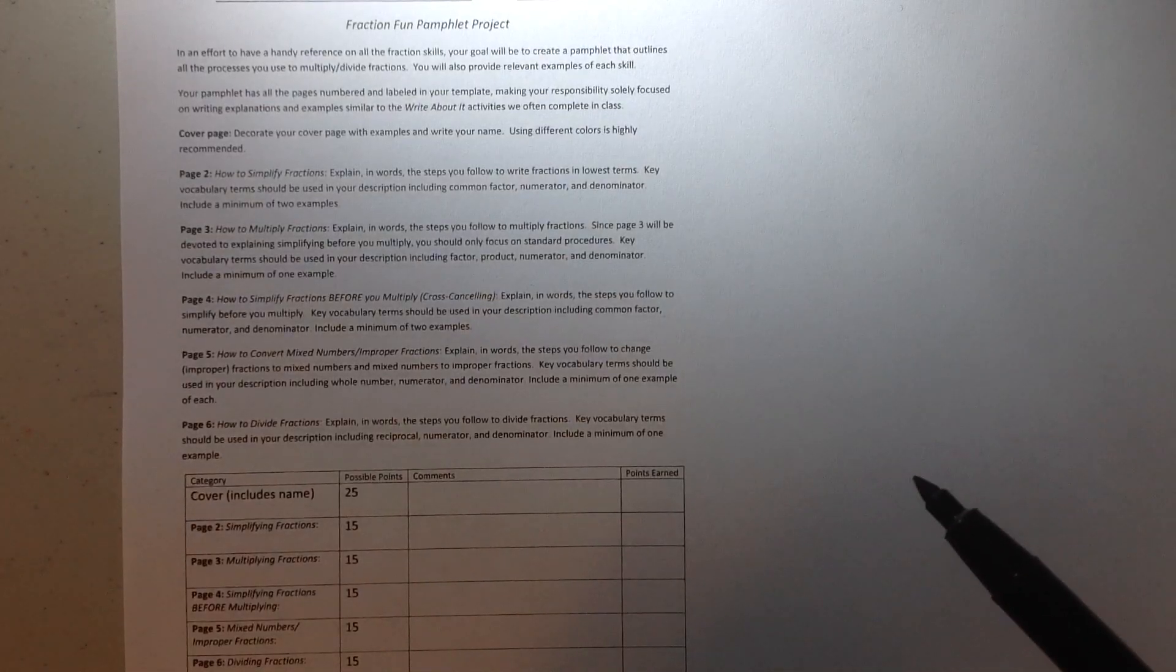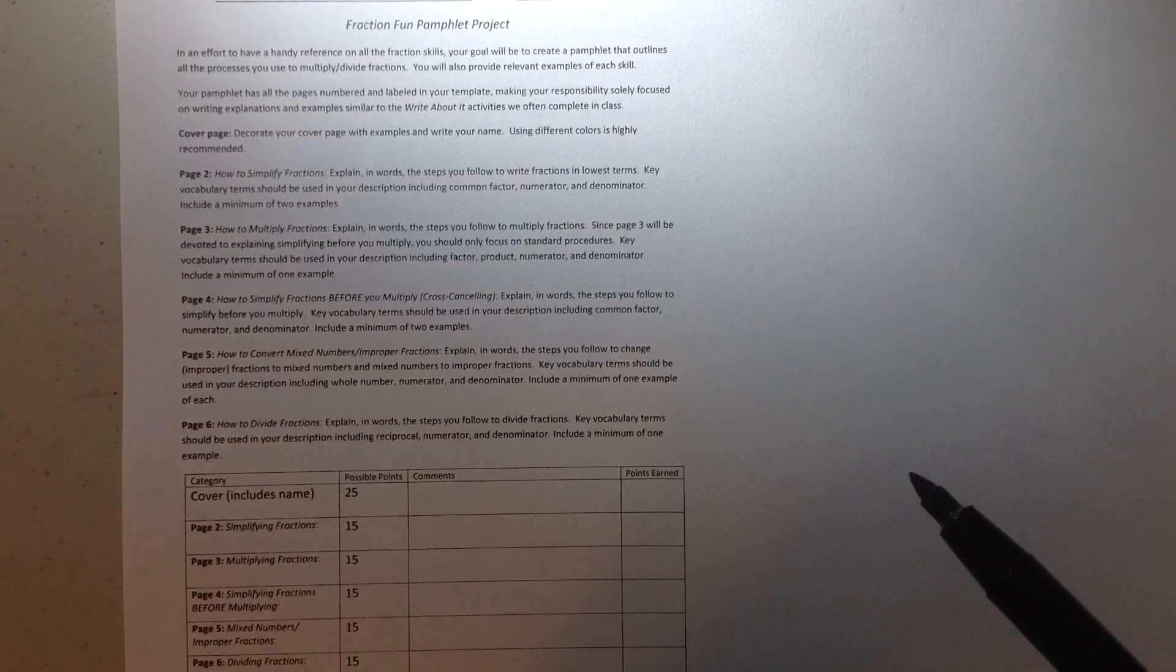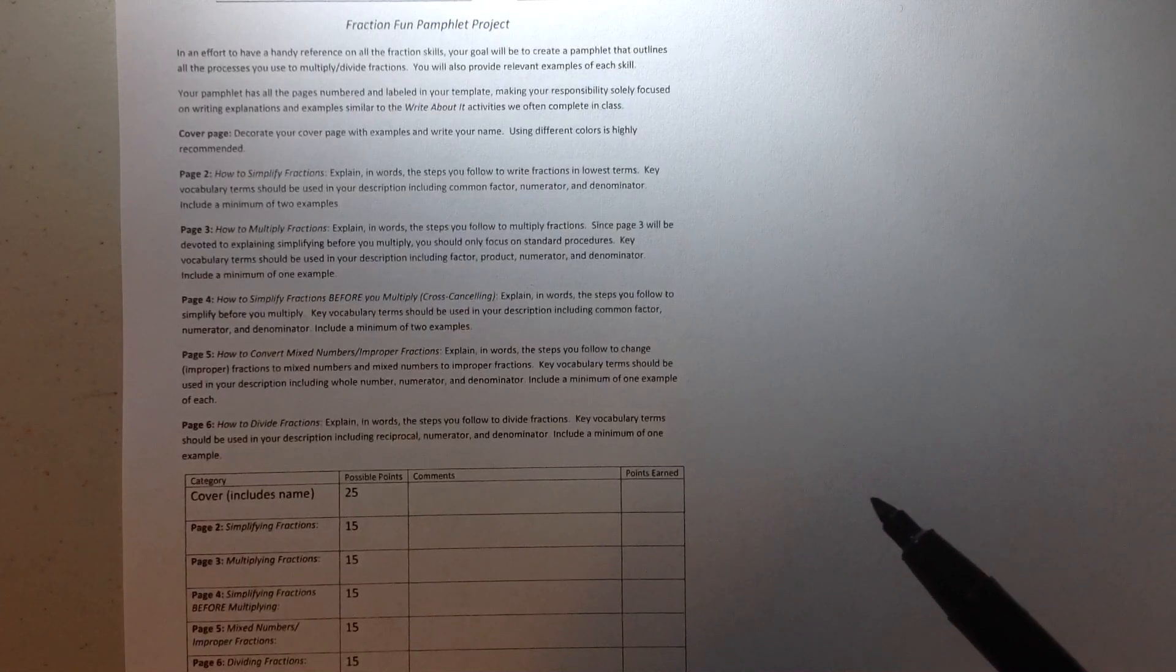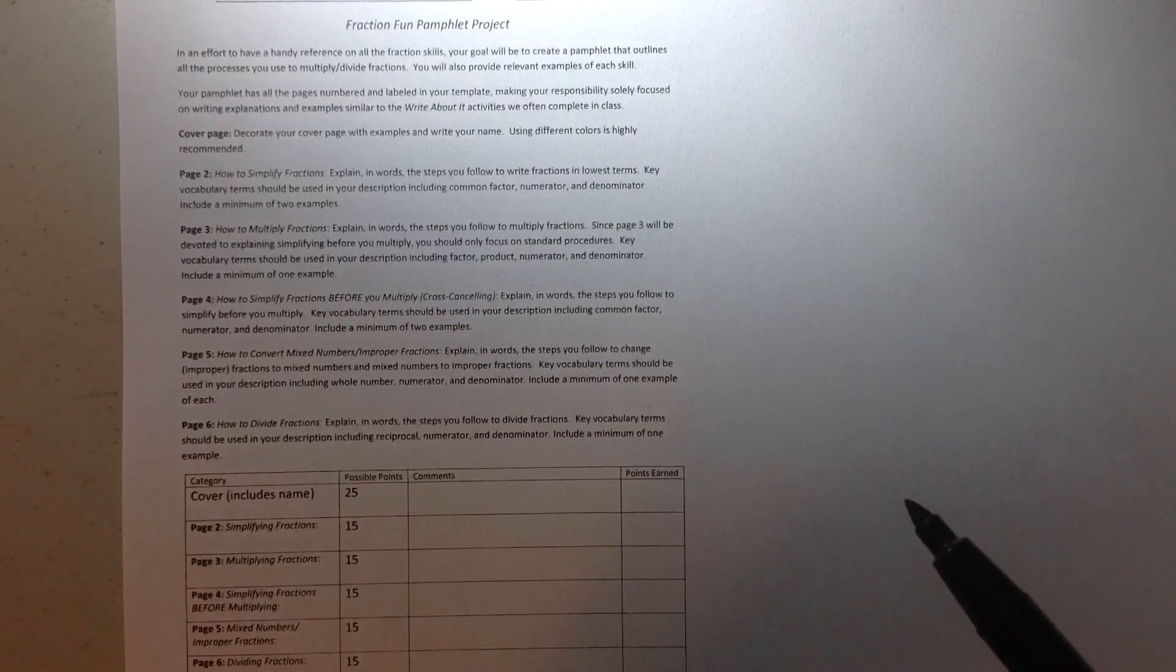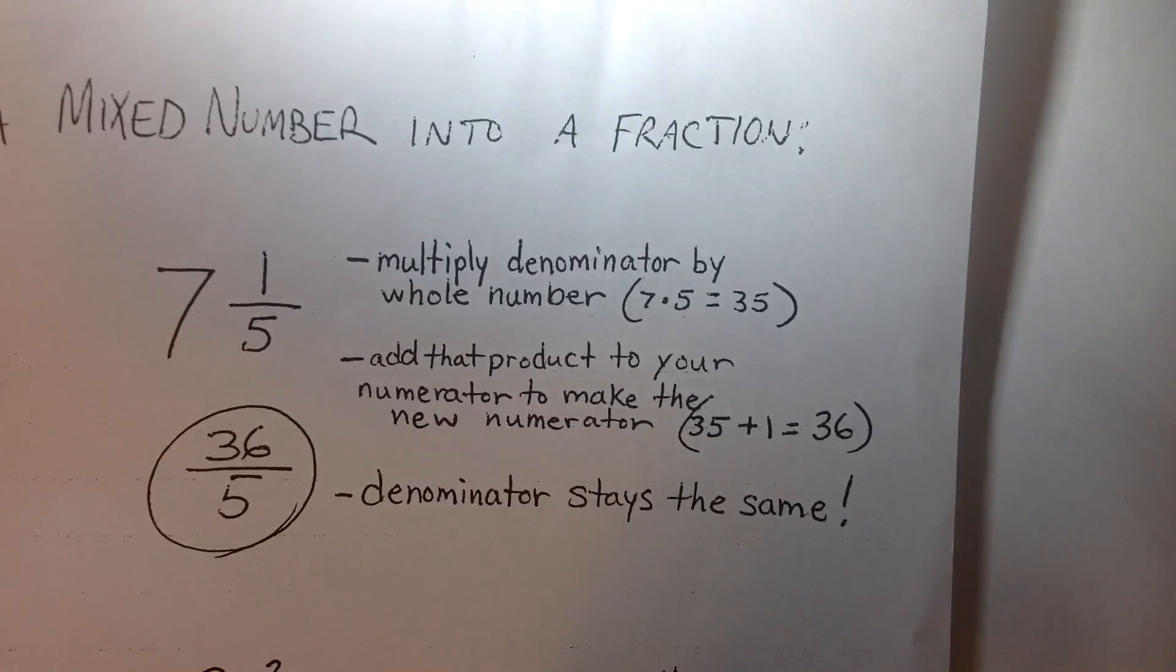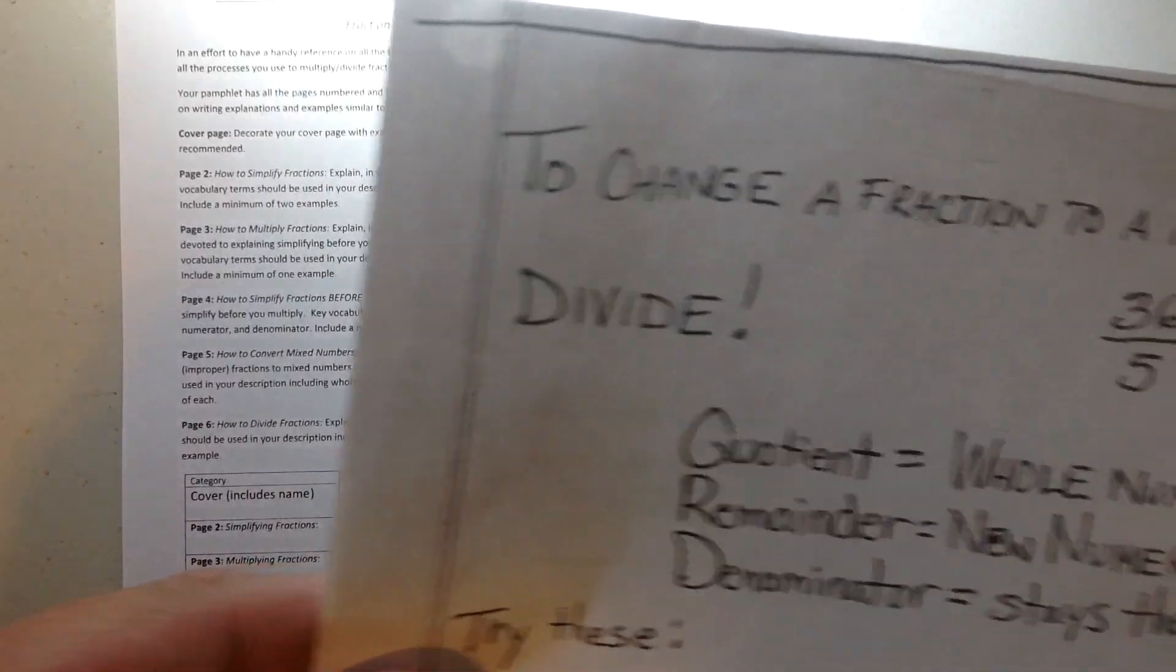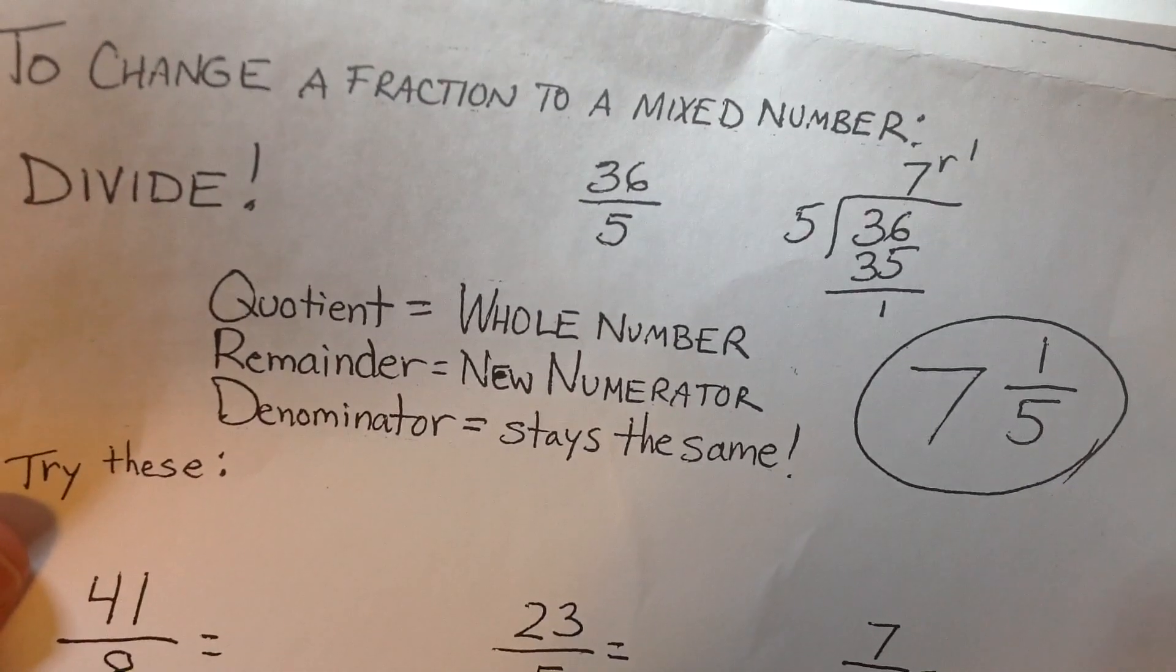The next step asks you to explain how to convert mixed numbers to improper fractions and vice versa. So you're explaining the steps you follow to change improper fractions to mixed numbers, and mixed numbers to improper fractions. Key vocabulary terms should be used in your description, including whole number, numerator, and denominator. And you are to include a minimum of one example for each. You know, I remember in class as well that a handout was given that explained exactly how to change a mixed number into a fraction with very clear written steps, and how to change a fraction to a mixed number with very clear written steps.